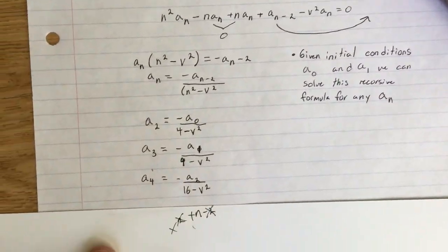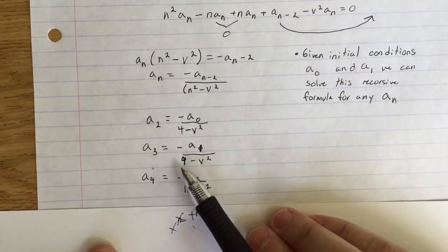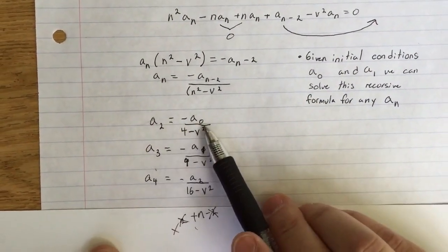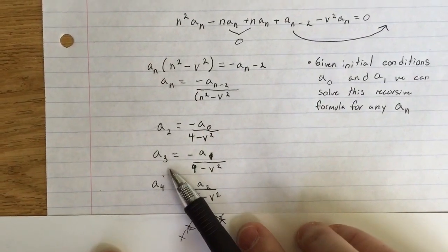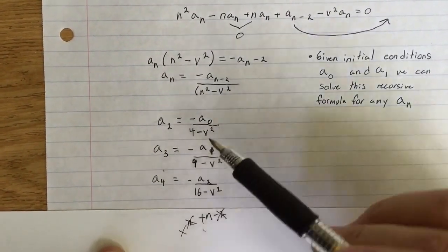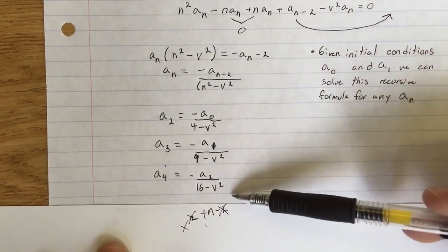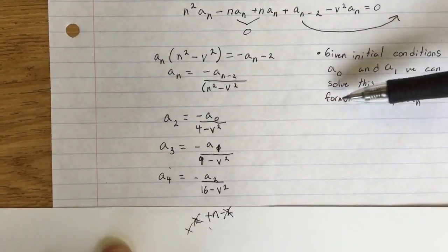Because as you can see from these first three terms worked out, a_2 relies on a_0, and a_3 relies on a_1. So when you go forth and you're able to just continue working, you would be able to start after you've given these.